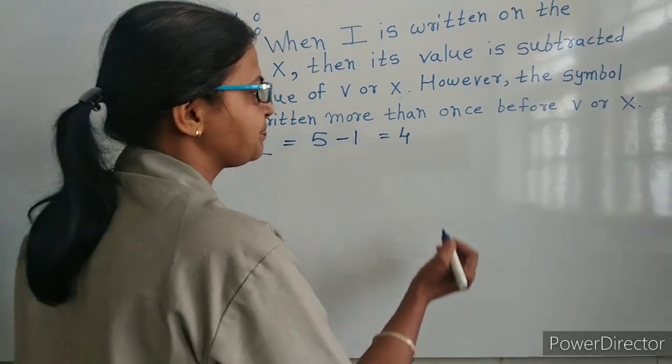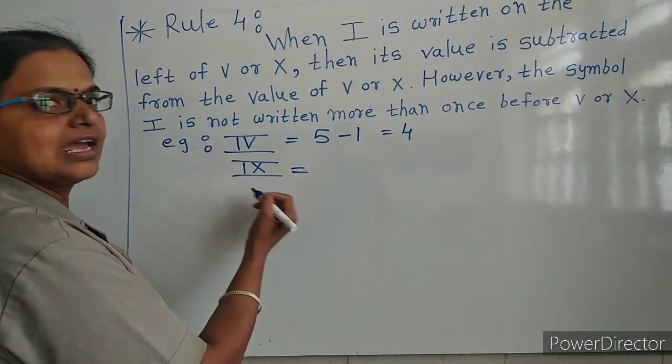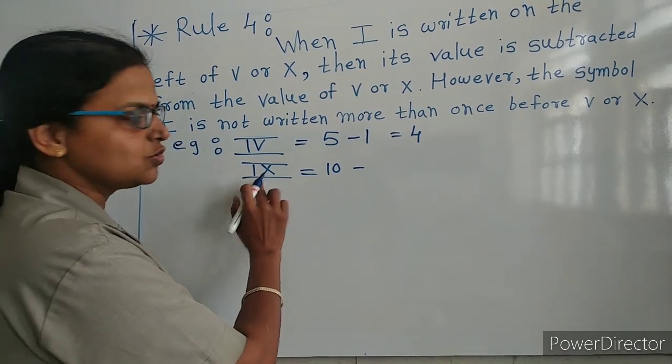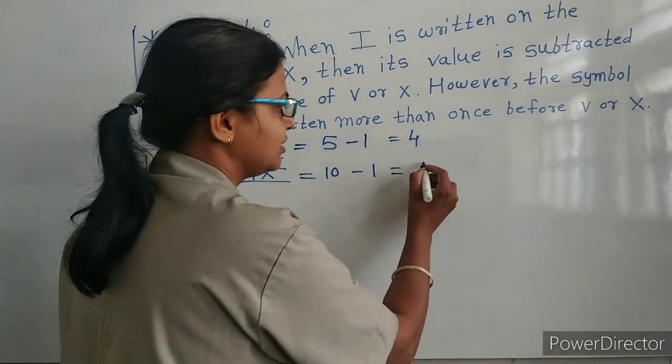The next example is IX: X value is 10, I's value is 1, so 10 minus 1 is 9.